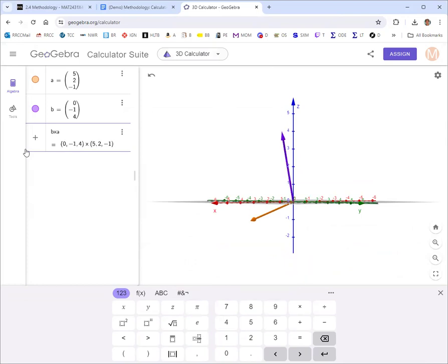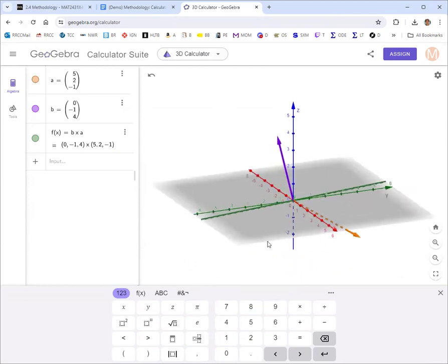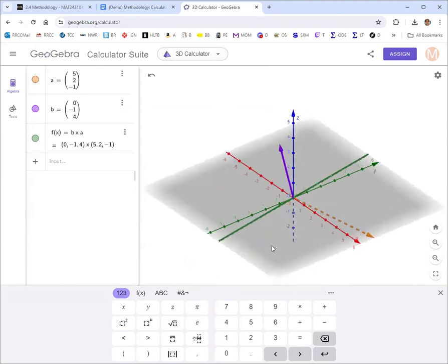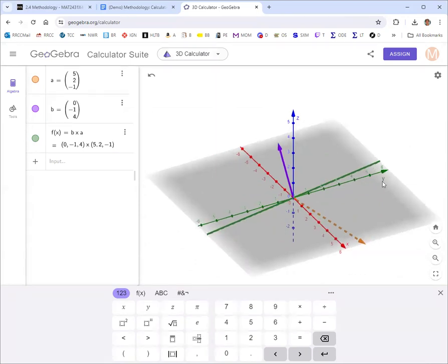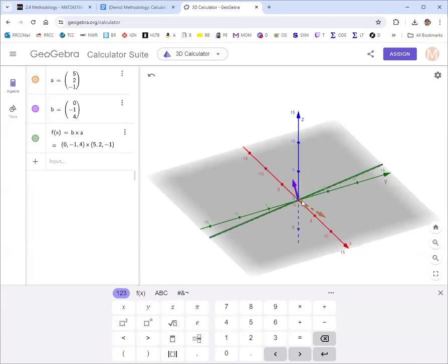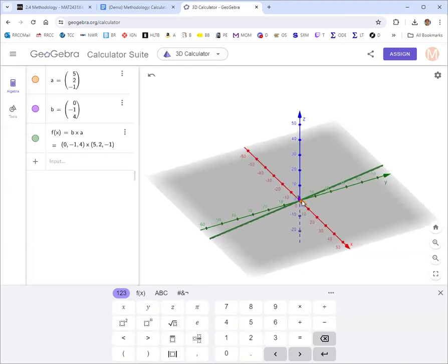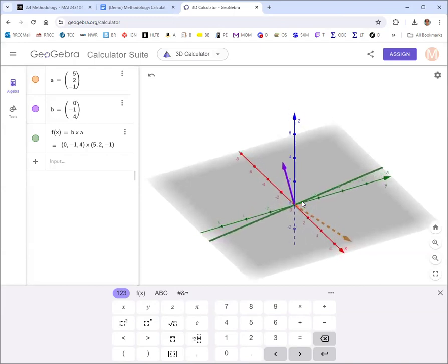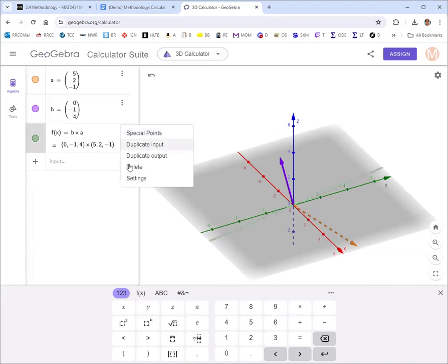Looks like bxa will automatically calculate the cross product for you, look at that. What it ends up doing there is kind of creating a line of where this cross product is. Yeah, so that's an infinite line depending on if you're using the right-hand rule or that. Yeah, maybe that's not what we want, so we'll just call it ba.